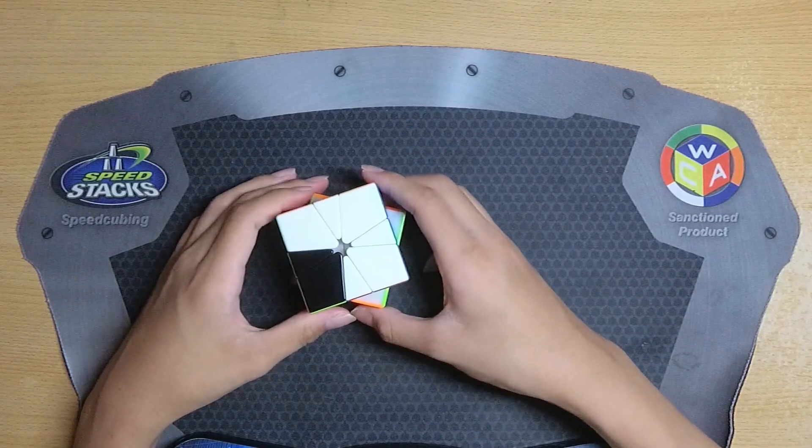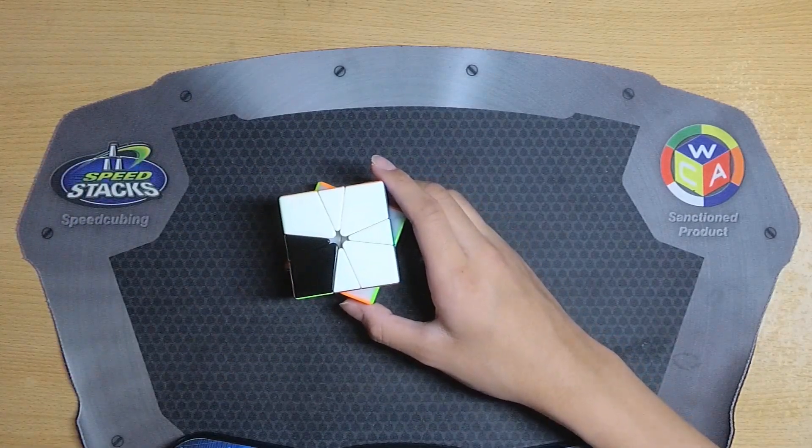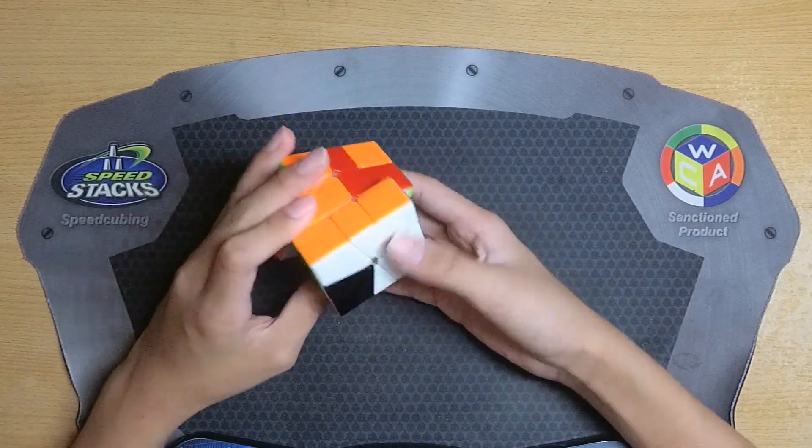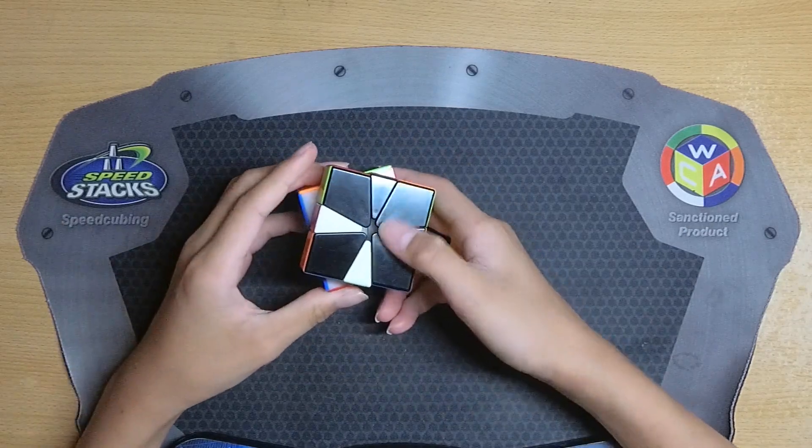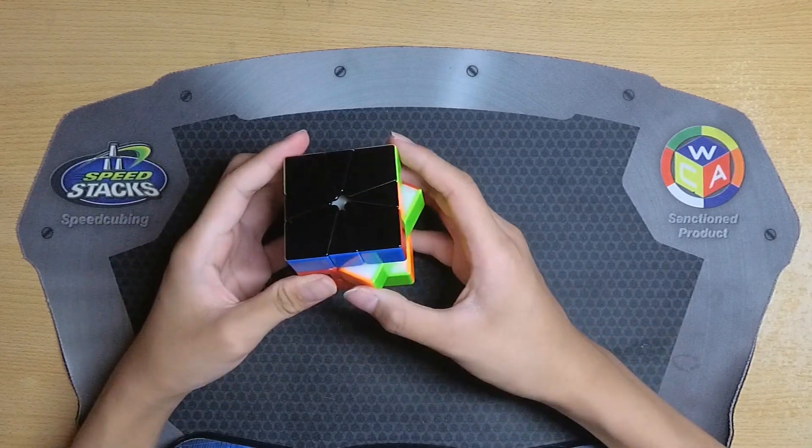Unfortunately I didn't do that. I was kind of rushing myself so I didn't really pay attention to what I could have done better. What I ended up doing was misaligning the top layer instead and doing this, and from here I had to do an EO alg.